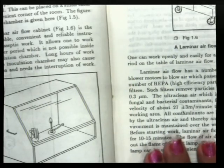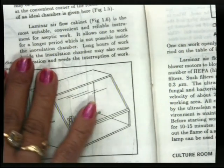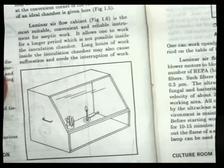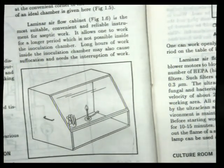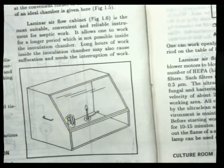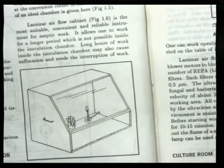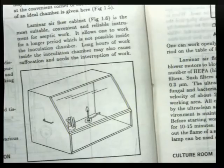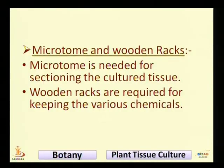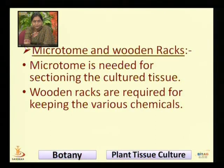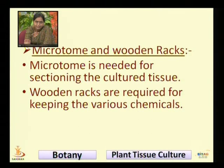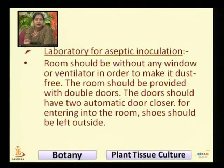The microtome is needed for sectioning culture tissues. Wooden racks are required for keeping various chemicals. Here is one of the microscopes — the binocular — and also the laminar air flow instrument.